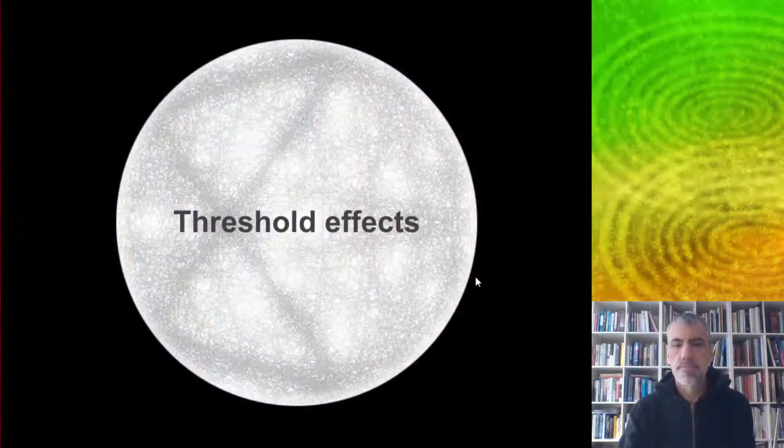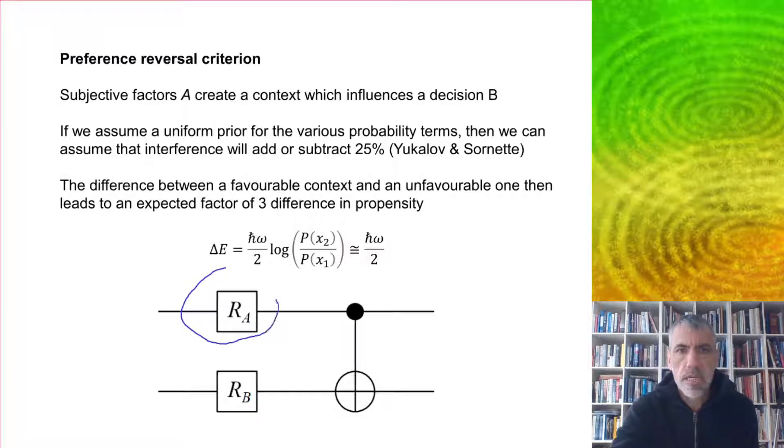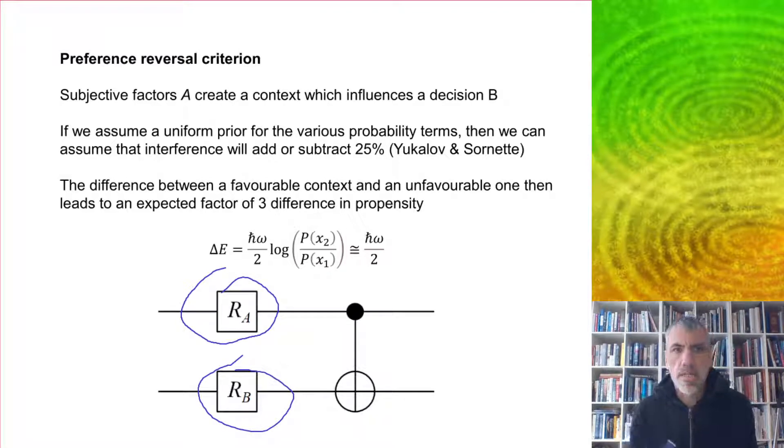Some of the strongest empirical evidence for quantum effects in the social sciences are shown by threshold effects. Consider a circuit where subjective factors A create a context which influences decision B. If we assume a uniform prior for the various probability terms, we can assume that interference will add or subtract 25% according to quantum decision theory.